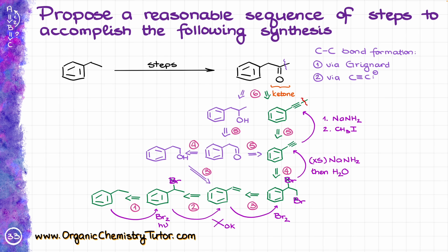Coming back to the synthesis, the last step is the conversion of my alkyne to the corresponding ketone. We'll do this using a bulky borane — something like 9-BBN, or disiamylborane, or dicyclohexylborane — which is highly sensitive to steric hindrance. We then follow that up with oxidation using hydrogen peroxide in basic media, which initially forms the corresponding enol, which quickly undergoes keto-enol tautomerization to give us the ketone as our final product.